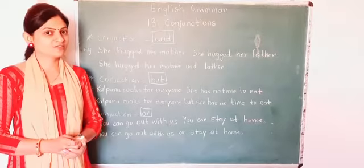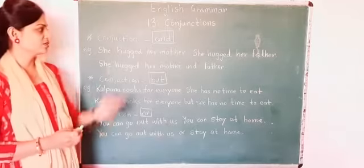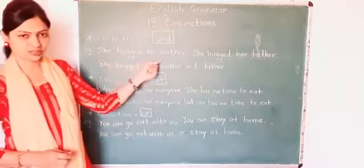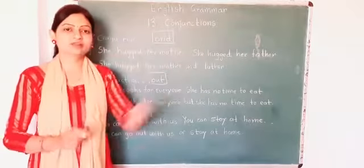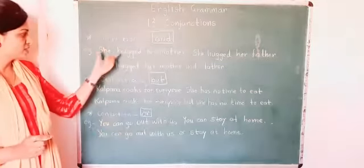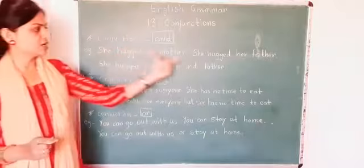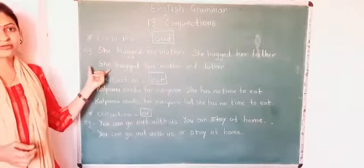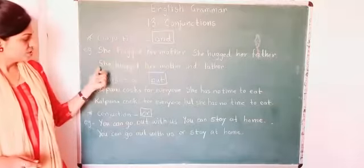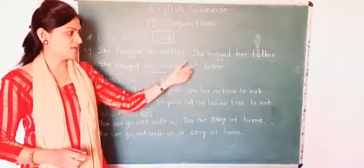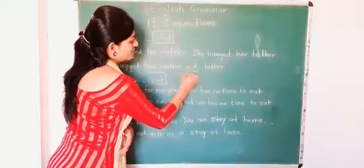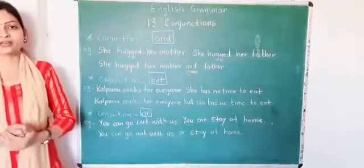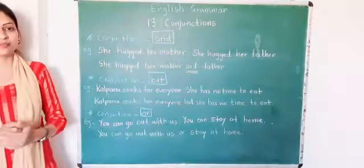First we will see about conjunction 'and'. For example: She hugged her mother. She hugged her father. These are two separate sentences. So how will we write by using conjunction 'and'? She hugged her mother and father. We have added conjunction 'and' here to make this sentence.